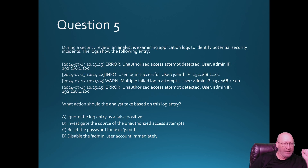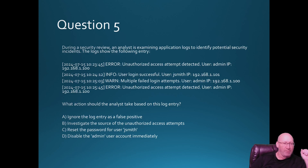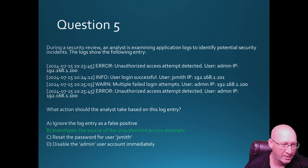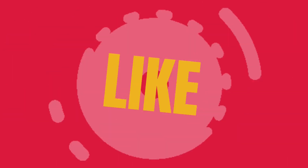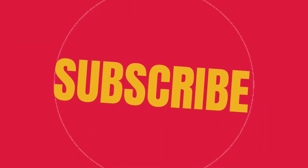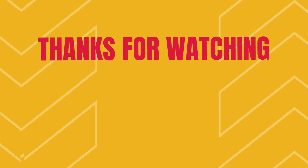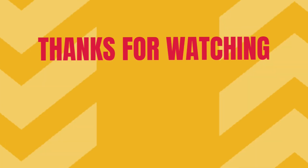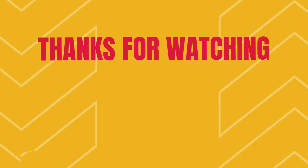The correct action is option B — investigate the source of the unauthorized access attempts. If the source IP is on our network, we need to find out what's happening. Is it someone who forgot their password, or is it a brute force attack? Probably the latter. That's the last question — the answer is B.